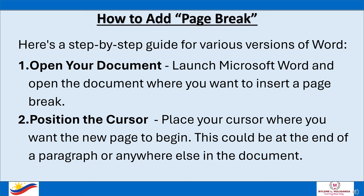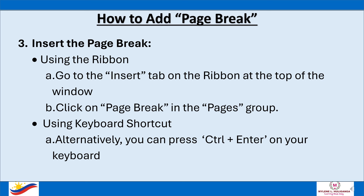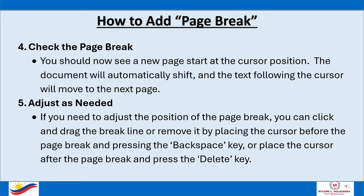How to add a page break — here is a step-by-step guide. First, open your document: launch Microsoft Word and open the document where you want to insert a page break. Then position the cursor where you want the new page to begin, such as at the end of a paragraph. Third, insert the page break using the ribbon: go to the Insert tab and click on Page Break in the Pages group. Alternatively, you can press Ctrl + Enter on your keyboard. Fourth, check the page break — you should now see a new page start at the cursor position, and the text following the cursor will move to the next page. Finally, adjust as needed: click and drag the break line, or remove it by placing the cursor before the page break and pressing Backspace, or place the cursor after the page break and press Delete.